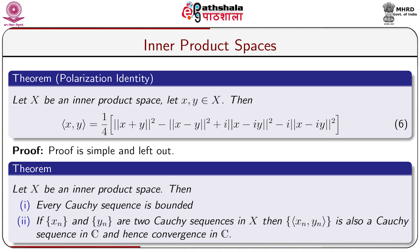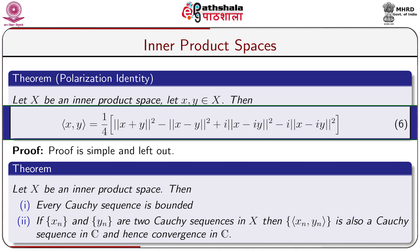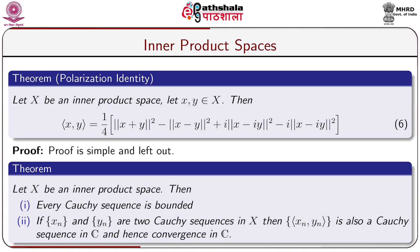We now state the Polarization Identity. Let X be an inner product space and let x, y belong to X. Then ⟨x, y⟩ equals one-fourth times [norm of x + y squared minus norm of x − y squared plus i times norm of x + i·y squared minus i times norm of x − i·y squared].